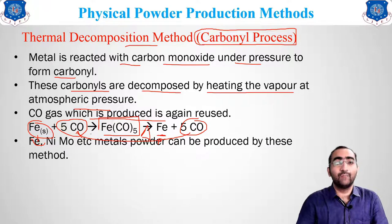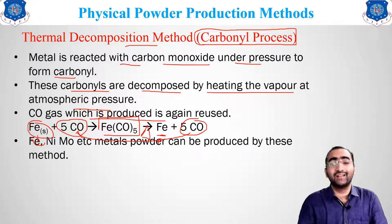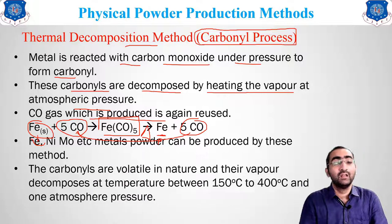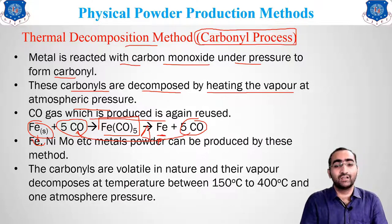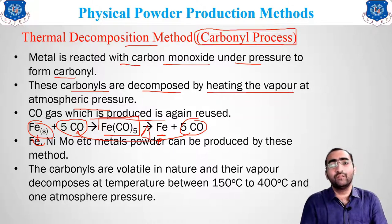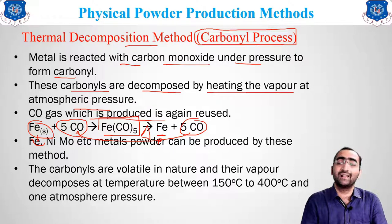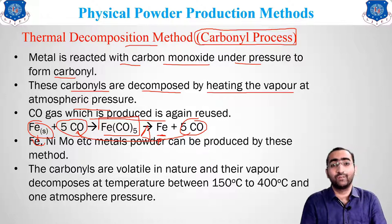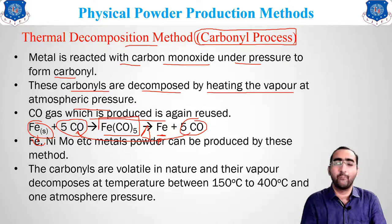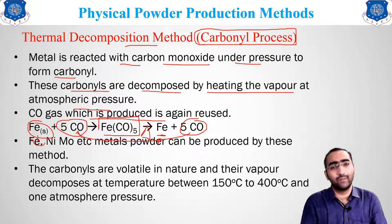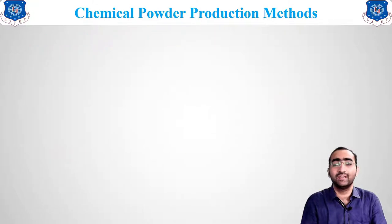The metals majorly produced using the carbonyl process are iron and nickel. The carbonyls are volatile in nature, and the temperature range for this process is between 150 to 400 degrees Celsius at 1 atmospheric pressure — meaning this method is more easily achievable compared to the condensation method.